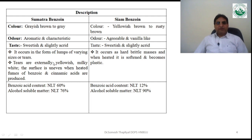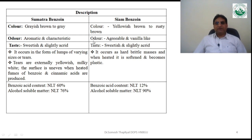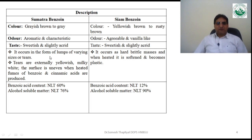Comparing the descriptions of Sumatra benzoin and Siam benzoin: the color of Sumatra benzoin is grayish-brown to gray, whereas Siam benzoin is yellowish-brown to rusty brown. The odor of Sumatra benzoin is aromatic and characteristic, while Siam benzoin has an agreeable, vanilla-like odor. Taste is sweet and slightly acrid in both varieties.